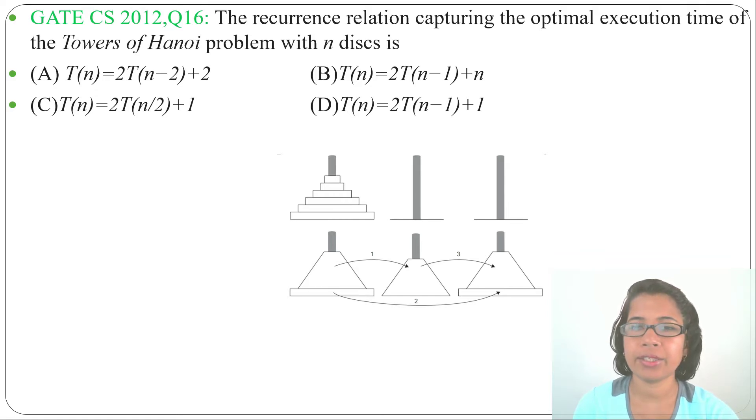The recurrence relation capturing the optimal execution time of the Tower of Hanoi problem with n disks is, and four options are given. Before solving this question, first understand what is Tower of Hanoi.